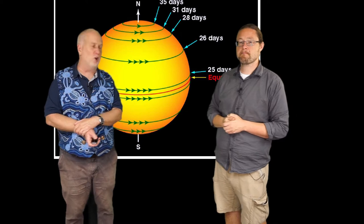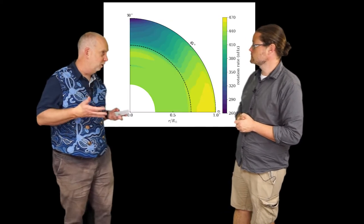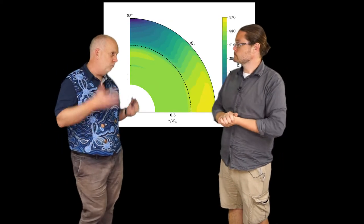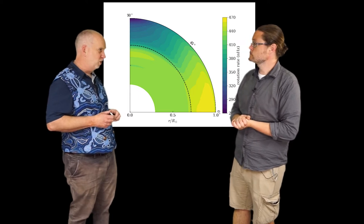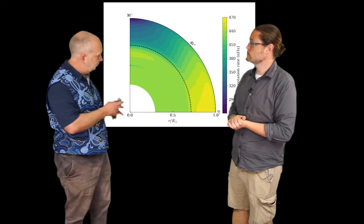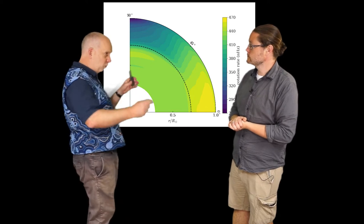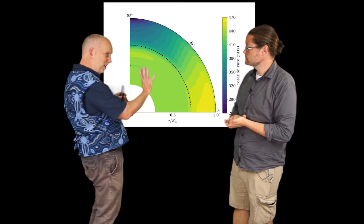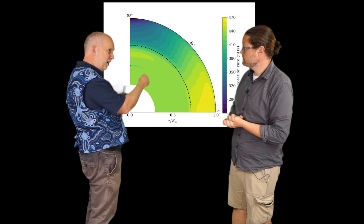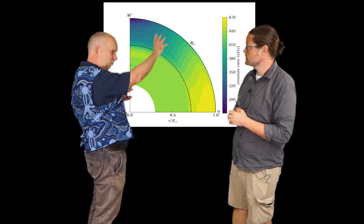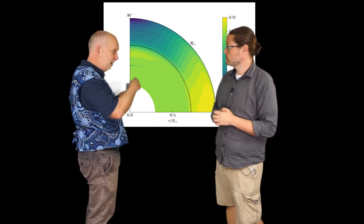It actually occurs below the surface. The helioseismology we talked about last time is so precise, you can actually measure the rotation inside the Sun. And what you can see is that the radiative zone, the zone where the photons are just random walking away, where it all rotates as a solid body, going into the convective zone, you get different speeds, different altitudes, and different depths.